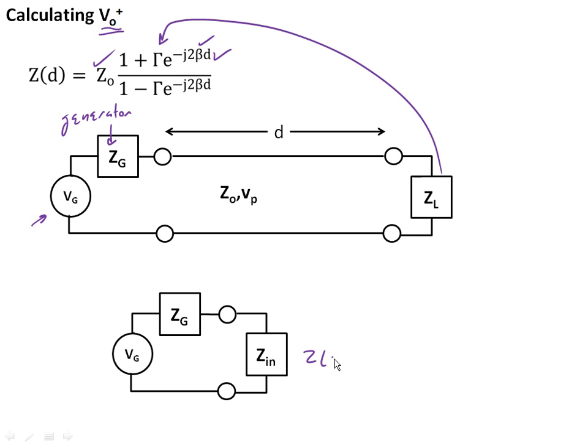And so Z of d is actually the input impedance right here. Now we have a voltage source, a generator impedance, and an input impedance. This is a simple voltage divider, and this one's pretty easy to do. So we know V-naught plus is equal to the input impedance over Z sub G plus Z sub N. And we have everything we need to be able to actually solve what the voltage delivered to the load is and calculate the signals in transmission lines.